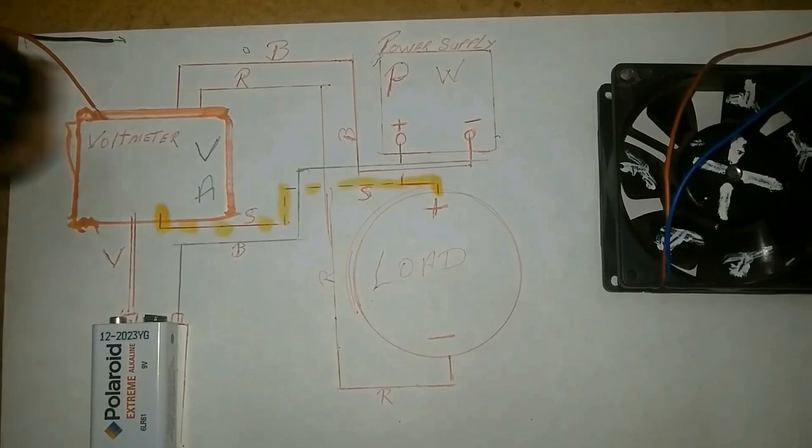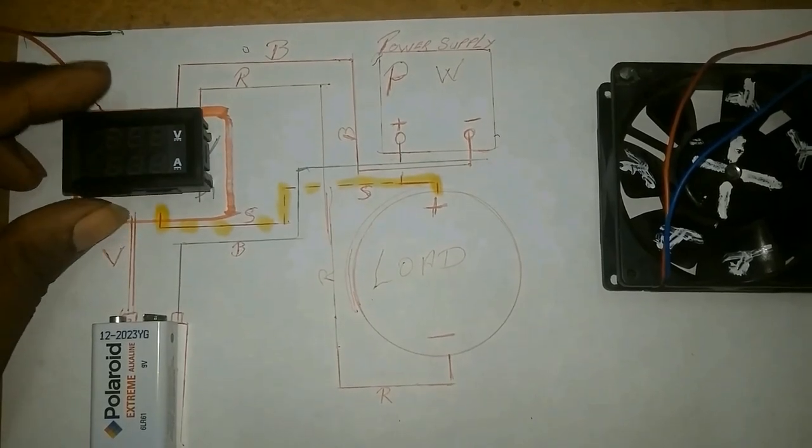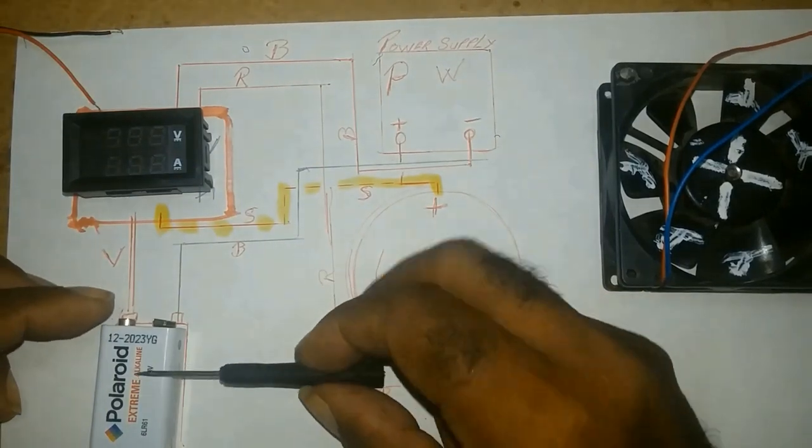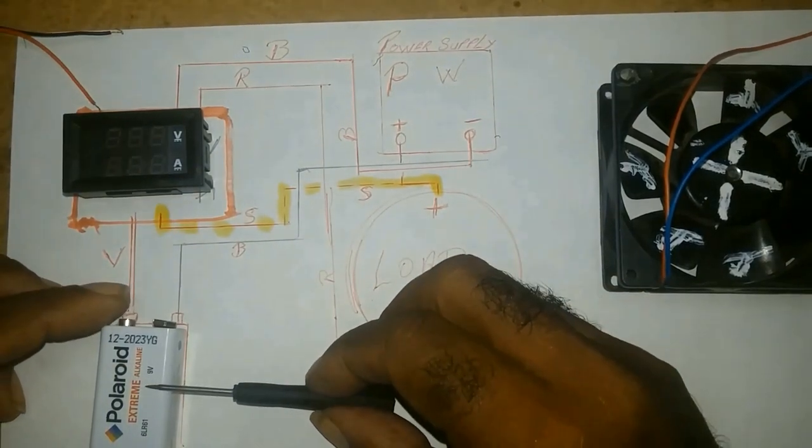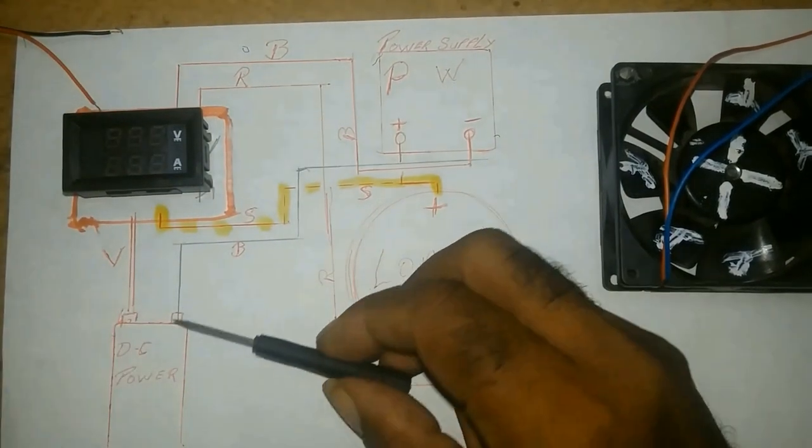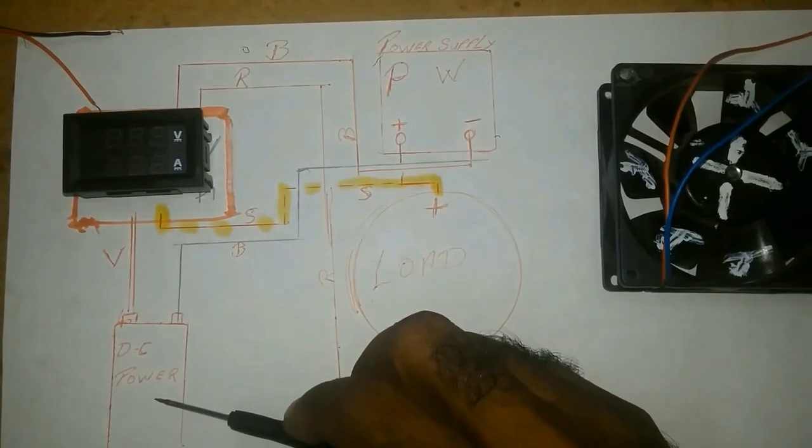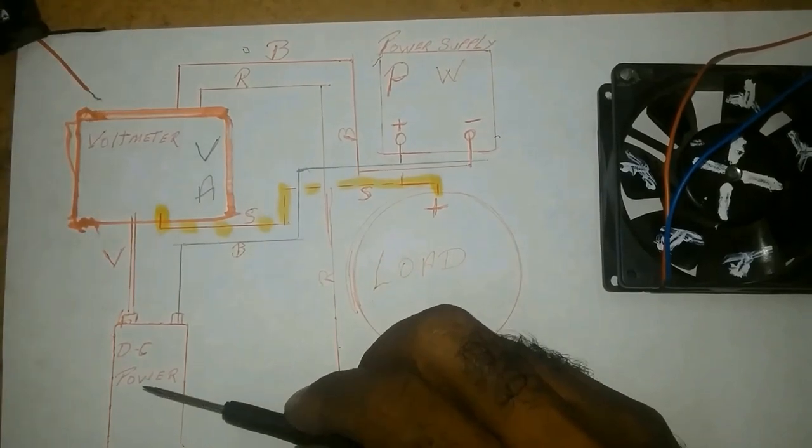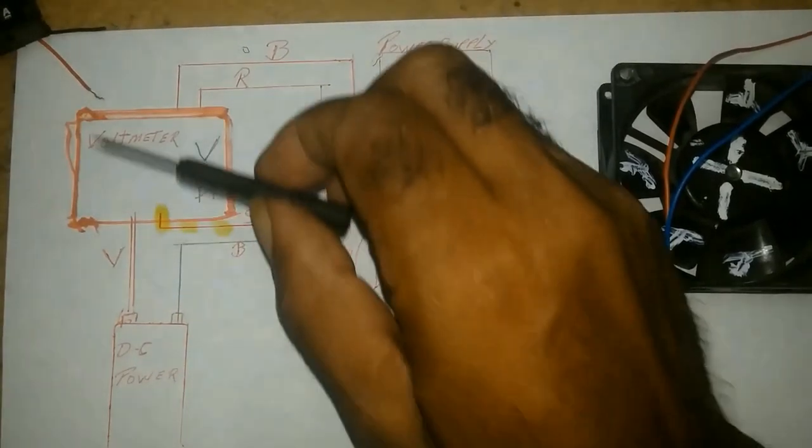Now to hook up the meter on the independent power supply, I'll be using a 9 volt battery. This is my schematic or diagram. Your 9 volt battery.